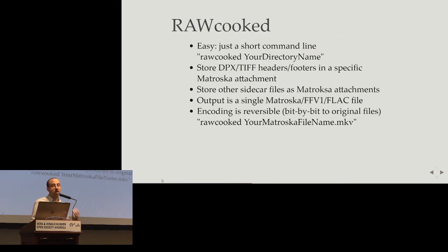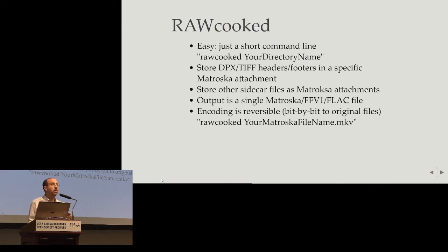This is why the RAWcooked project was born — it is a problem for archivists. They want better compression for lower storage cost, and they also want to be able to revert back to DPX and TIFF, the exact same files. RAWcooked helps to store the content in FFV1, and we also store the metadata in Matroska attachments.